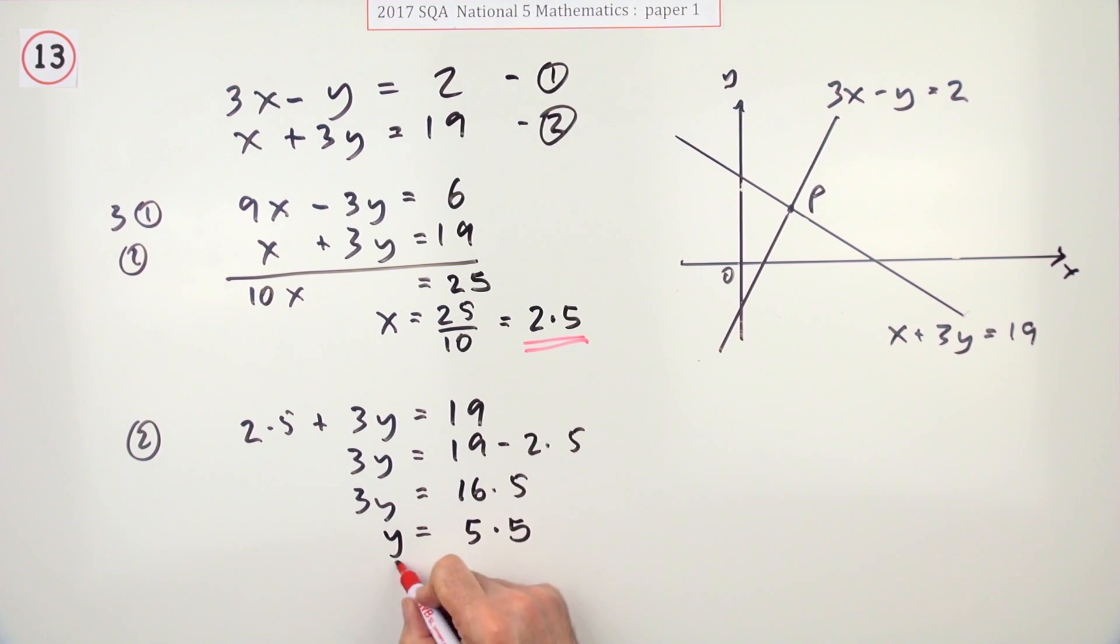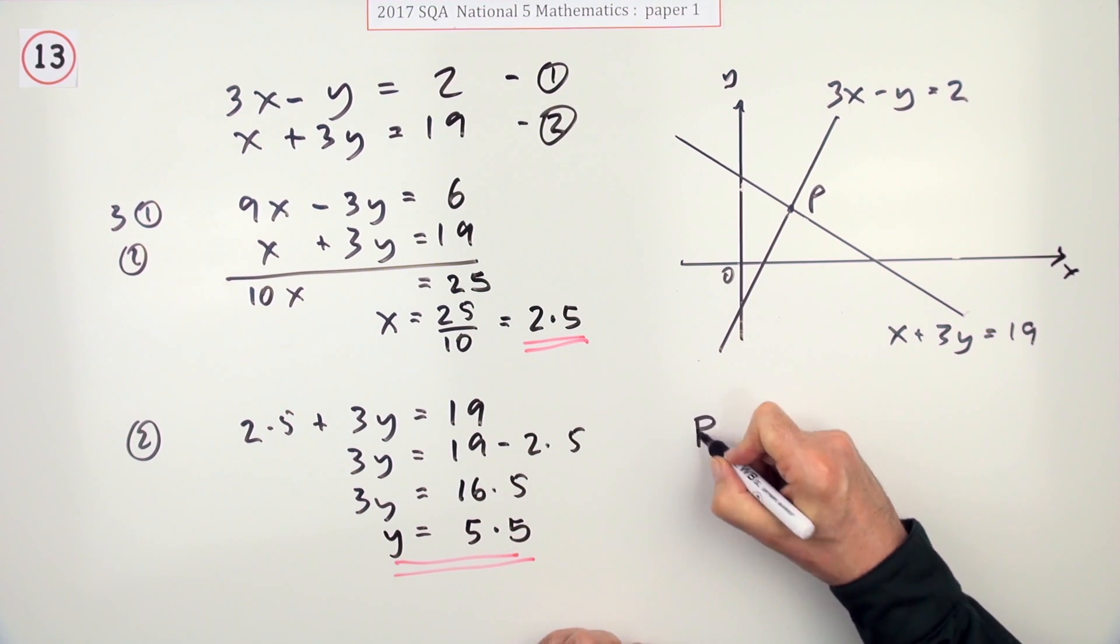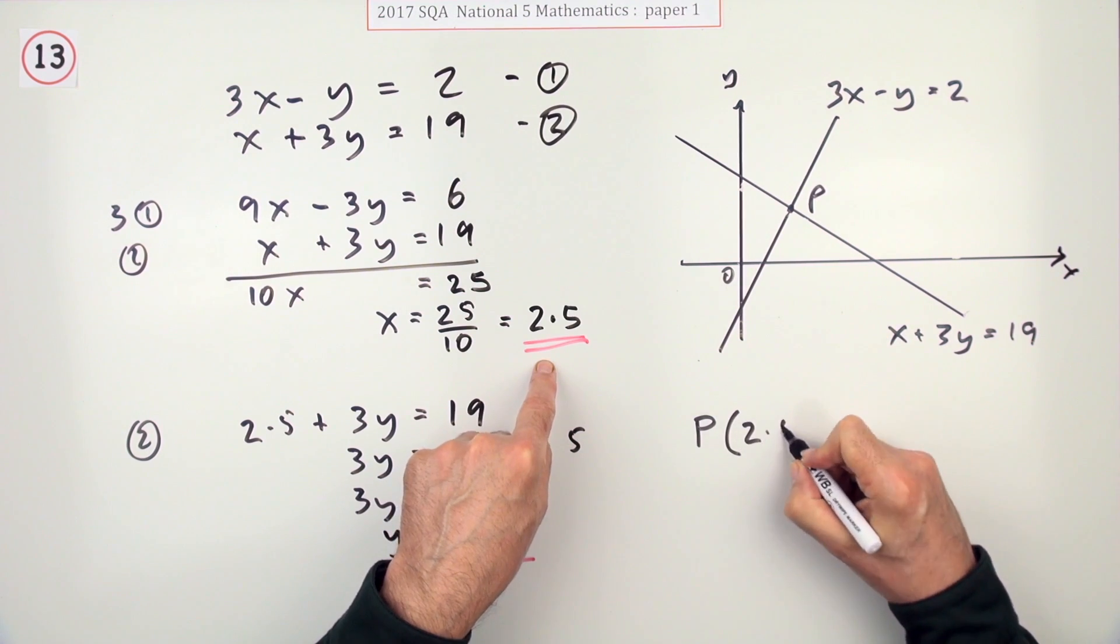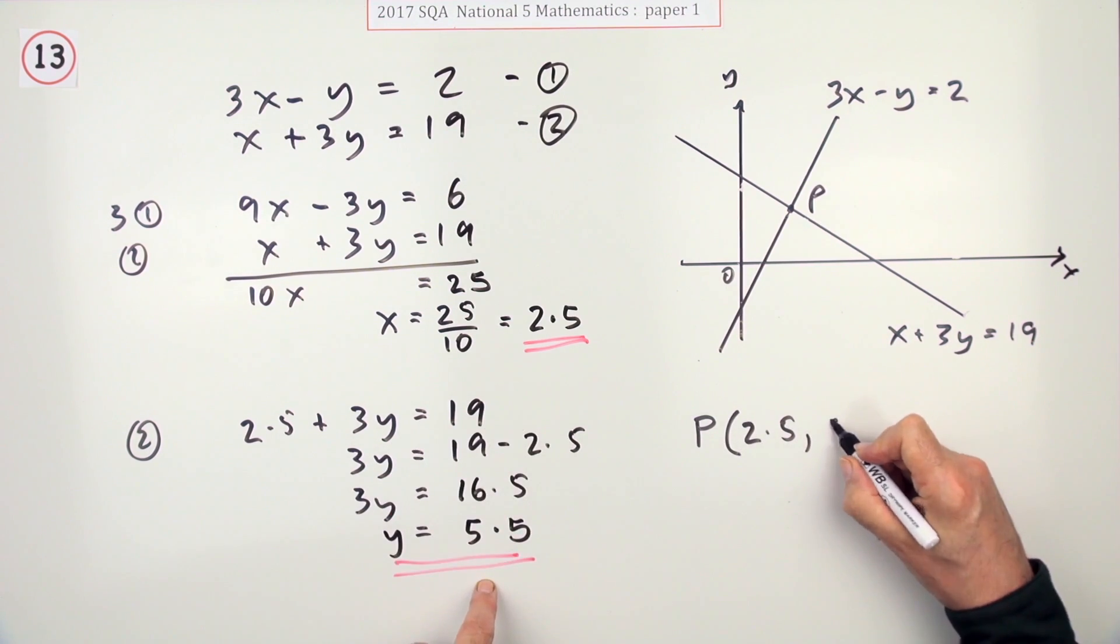So there's the two answers. I think I'll just write it down. So what were the coordinates of this point of intersection? Well, the x-coordinate was 2.5 and the y-coordinate was 5.5.